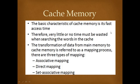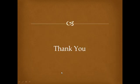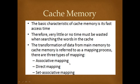A basic characteristic of cache memory is that it is very fast, so very little or no time is wasted when searching for a word in cache. The transfer of data from main memory to cache memory is referred to as a mapping process. We have three types of memory mapping: associative mapping, direct mapping, and set associative mapping. We will discuss each type in detail in our next lecture.